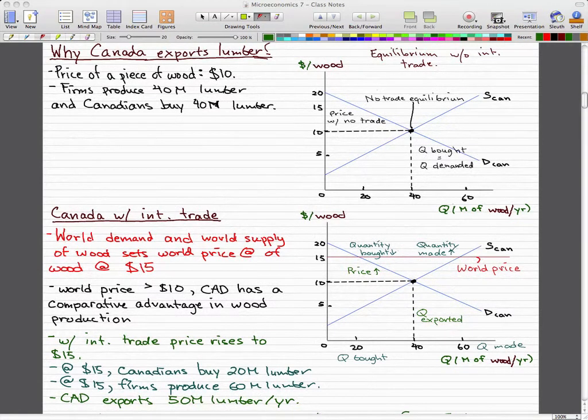If we pop in some international trade, world demand and world supply of wood actually determines that the world price of wood be set at $15. That is reflected in this graph with this red line set at $15. That is our world price.